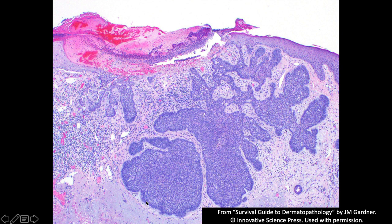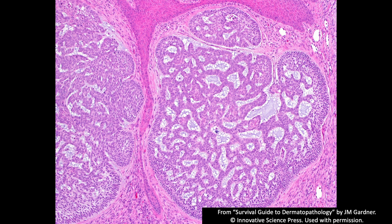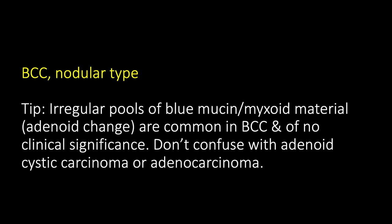Here's another example that looks great for BCC, but notice these big blue pools of mucin — in dermatology they say mucin, in pathology we often say myxoid; I use those interchangeably. These blue pools of regular size and shape in the middle of an otherwise normal basal cell carcinoma are a totally normal, common finding. Here's another example with irregular size and shape of the pools, nice peripheral palisading, clefting at the edge of the tumor nest, and mucin between the basaloid cells and stroma — classic features of BCC. This is called adenoid change.